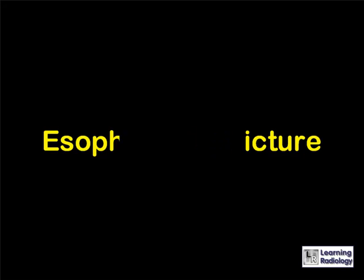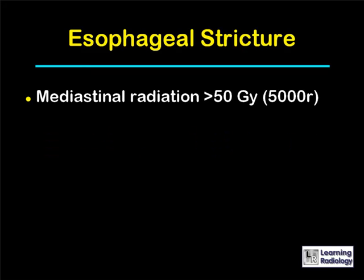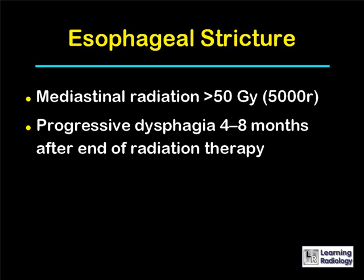Esophageal strictures usually require mediastinal radiation of greater than 50 gray, or 5,000 rads. This is frequently delivered for carcinoma of the esophagus itself, or of the lung, or for lymphoma. The symptoms are progressive dysphagia, usually starting several months after the end of radiation therapy.